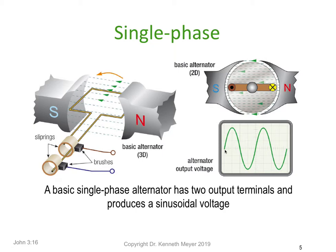As we rotate the coil we climb to the voltage maximum induced in the coil, therefore creating the current maximum. Then we descend down to the zero crossing point for the first half of the cycle, then the coil rotates through the other half and back to zero ready to do it all again. At each of those zero crossing points the coil in the magnetic field is parallel and not cutting any lines of flux. This is a basic single phase alternator — it has two output terminals and produces a single sinusoidal voltage wave shape.